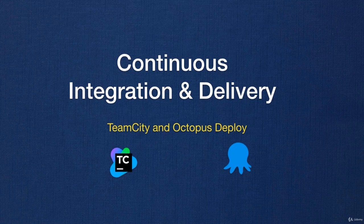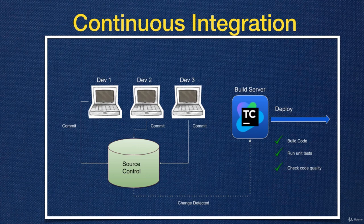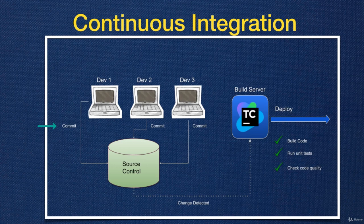Let's get started with continuous integration and delivery with TeamCity and Octopus Deploy. In software companies, there are multiple teams or developers that get the code from a main source code repository, make changes on it, and then push or commit their changes back.